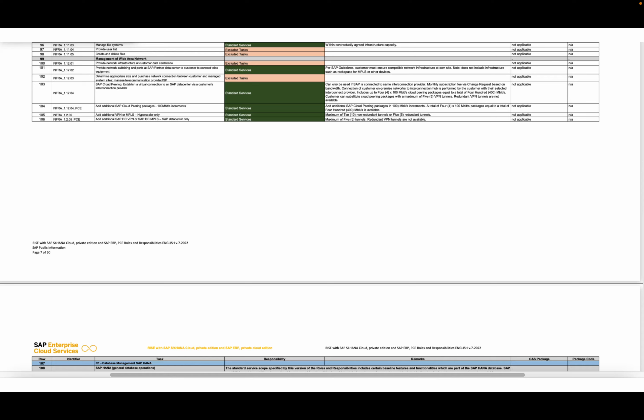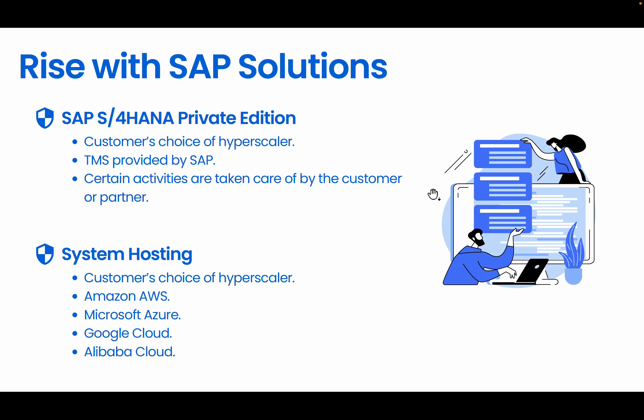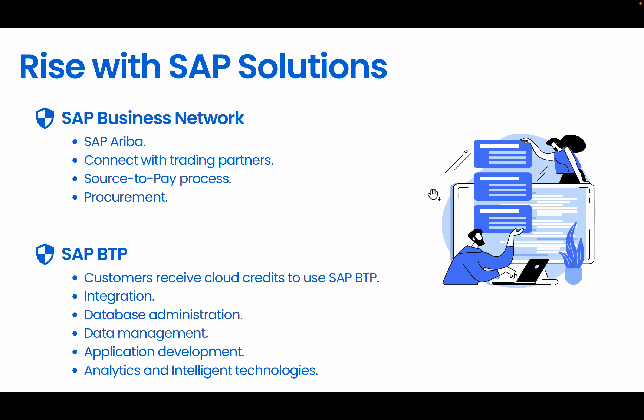The second solution is system hosting. The S/4HANA Private Cloud Edition can be hosted in SAP's own data center, or SAP also provides customers the opportunity to choose a hyperscaler of their own choice. The supported hyperscalers are Amazon AWS, Microsoft Azure, Google Cloud, and Alibaba Cloud.